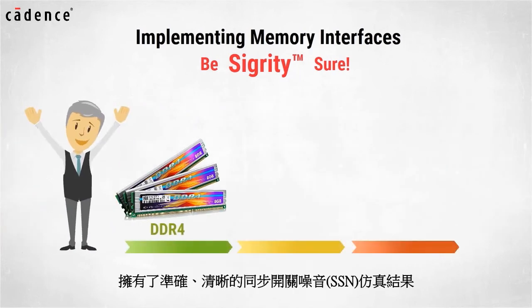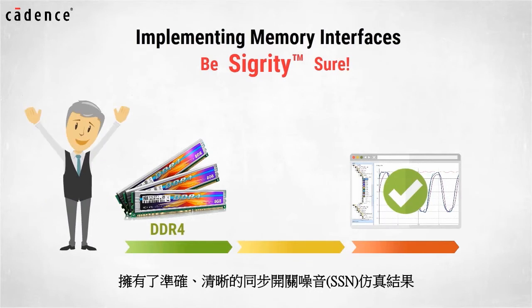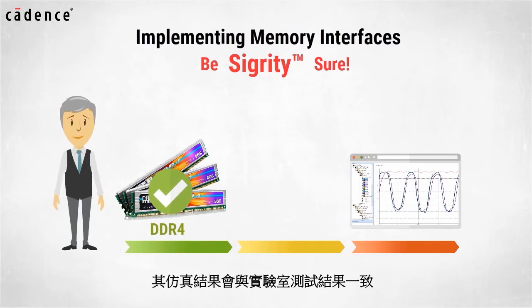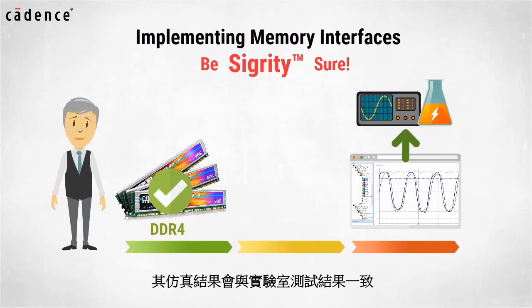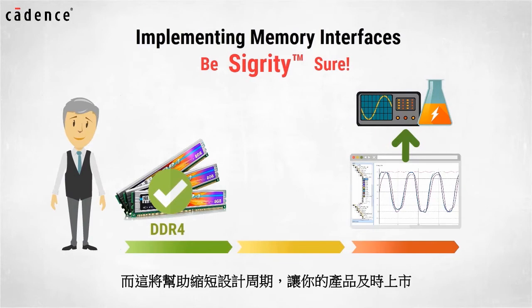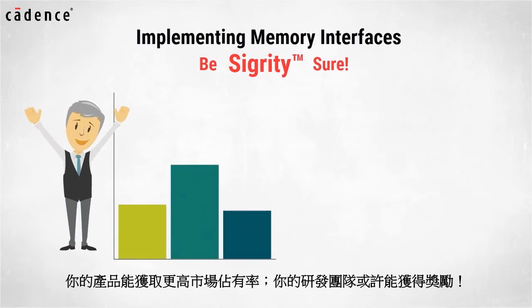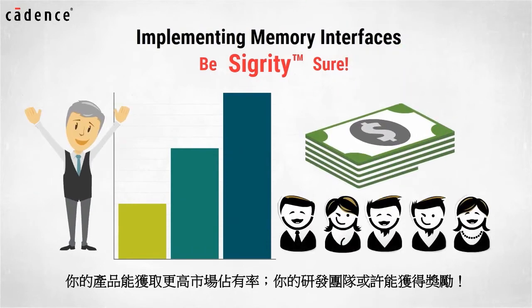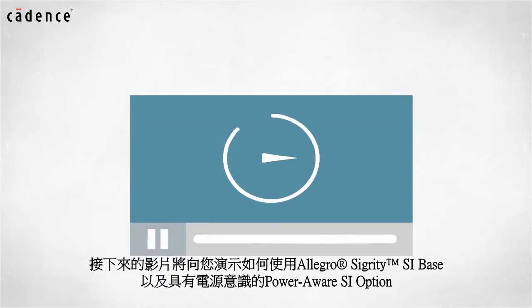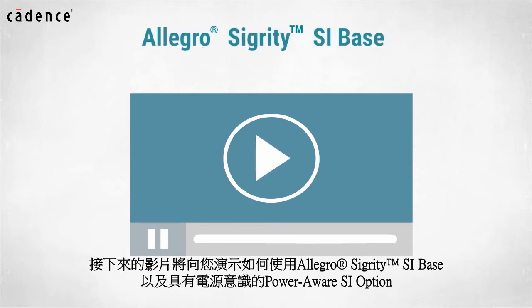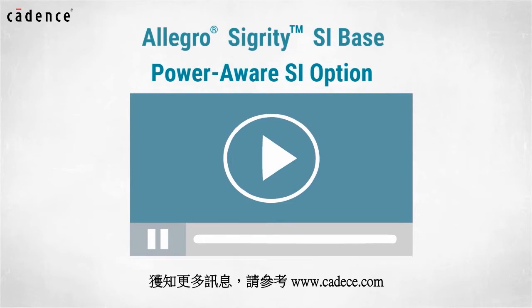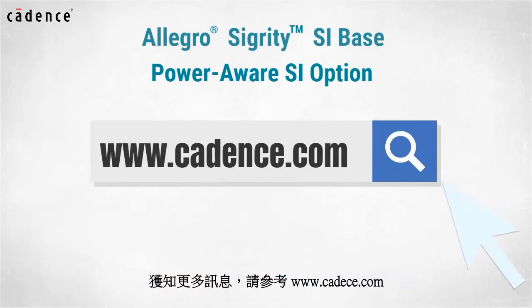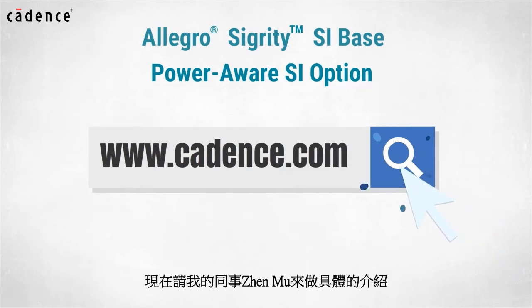With SSN simulation results captured accurately and simulating cleanly, SI engineers will have high confidence when they sign off on the memory interface that the simulation results will match the results measured in the lab. This helps reduce design respins and gets product to market on time. The results may be higher market share and maybe even a nice end-of-year bonus for your product development team. In today's video you will see us utilize the Allegro Sigridi SI base and power aware SI option. To learn more about these products visit us at www.cadence.com. Now I will turn it over to my colleague Jen Mu.